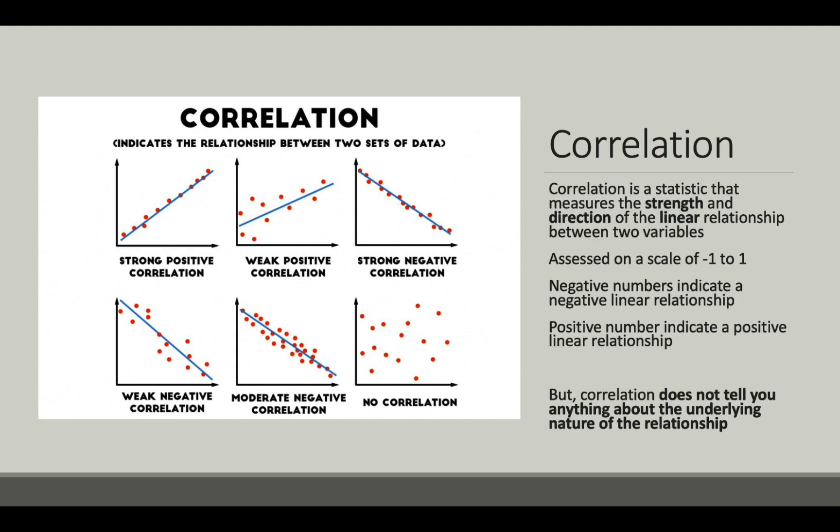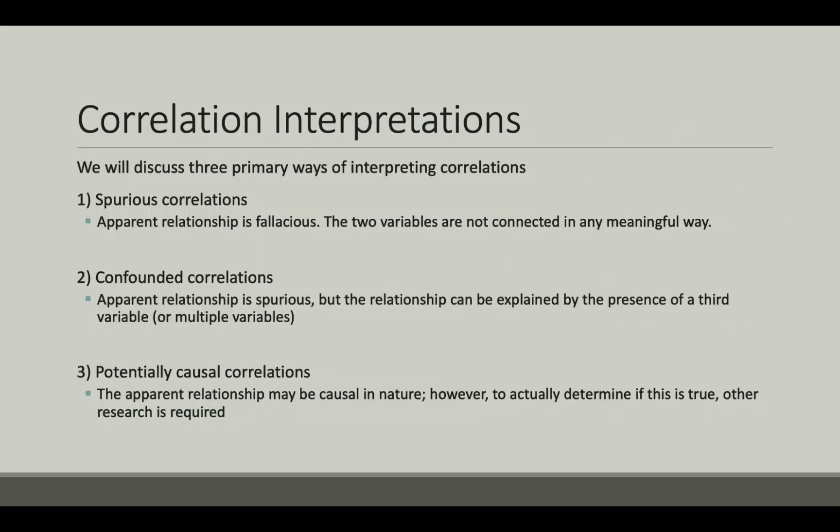We should be cautious, however, because correlations do not tell us anything about the underlying nature of the relationship between variables. In fact, the variables may not be related at all. To make correlation interpretation simpler, let's break correlations down into three basic categories, then we'll look at some examples.